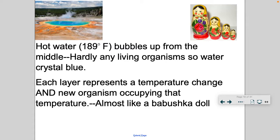Each color represents a temperature change and a new organism occupying that temperature — kind of like a matryoshka doll, layer upon layer. Hardly any living thing lives in the center, but as you edge out where the water cools, you start to see organisms that can thrive in those hot conditions.